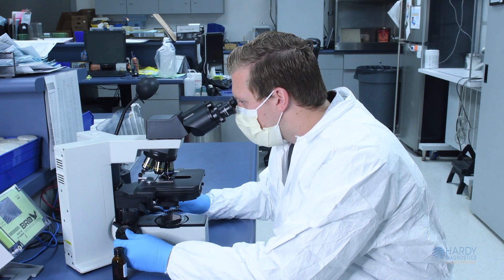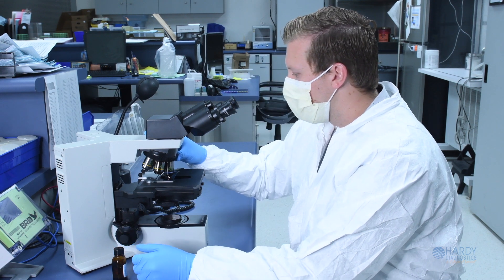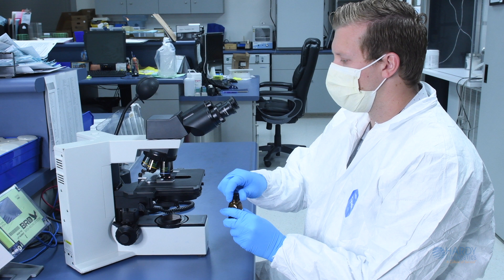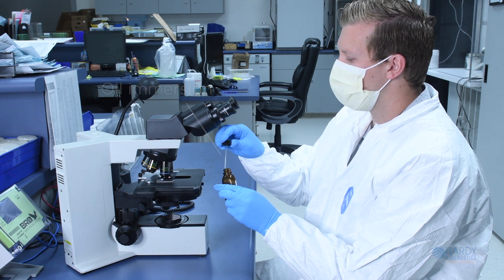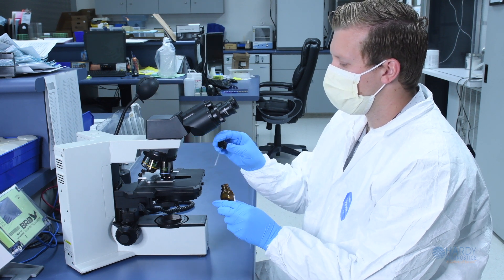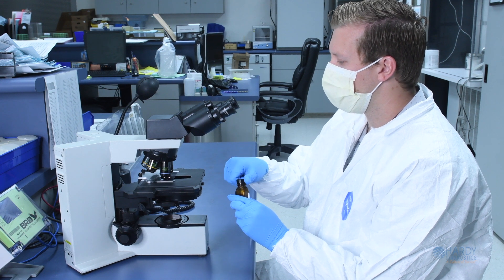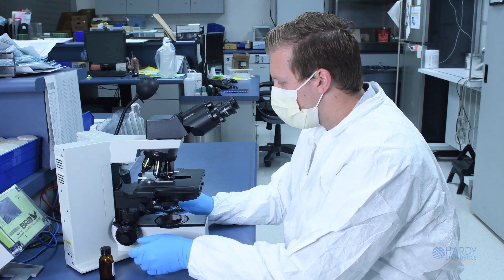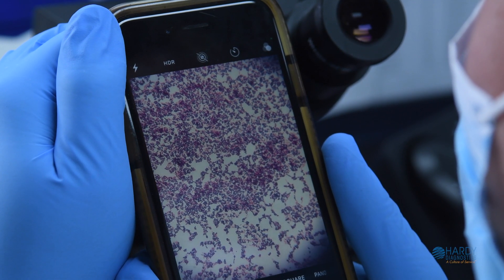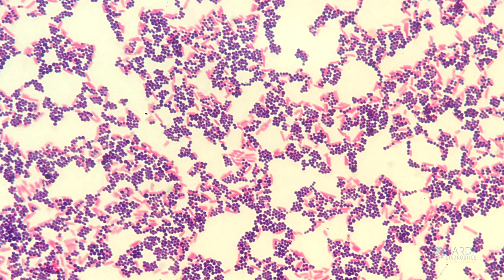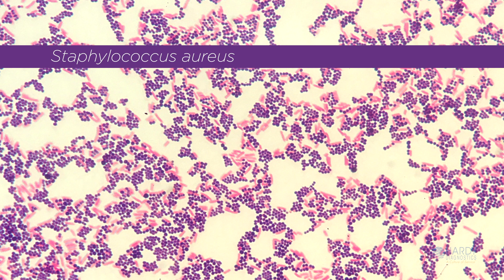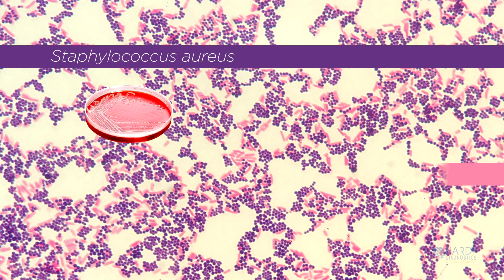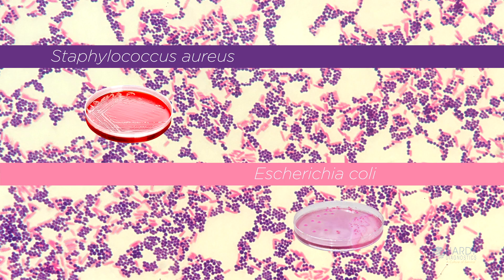The slide can now be viewed under the microscope. First focus on the image using the high dry objective lens marked 40x. Then, without removing the slide, switch to the high power oil immersion objective lens marked 100x, resulting in an overall magnification of 1000x. Here you see two organisms routinely used for quality inspection: the purple gram-positive cocci are Staph aureus, and the pink gram-negative rods are E. coli.